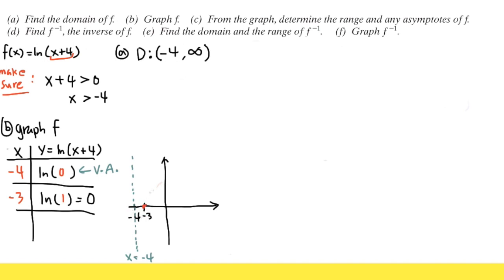Next, I'm going to choose x equals 0, because this won't be a nice number anymore. In that case, we get ln of 0 plus 4, which is ln of 4 inside. This is not a nice number; we use a calculator to compute it, which gives about 1.386. So this gives us the point 0 comma 1.386.